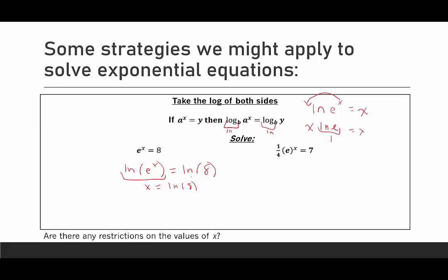And then we have x equals the natural log of 8. That's it. Then we can put that in our calculator because we have a key for the natural log, and we figure out that x is approximately 2.079.